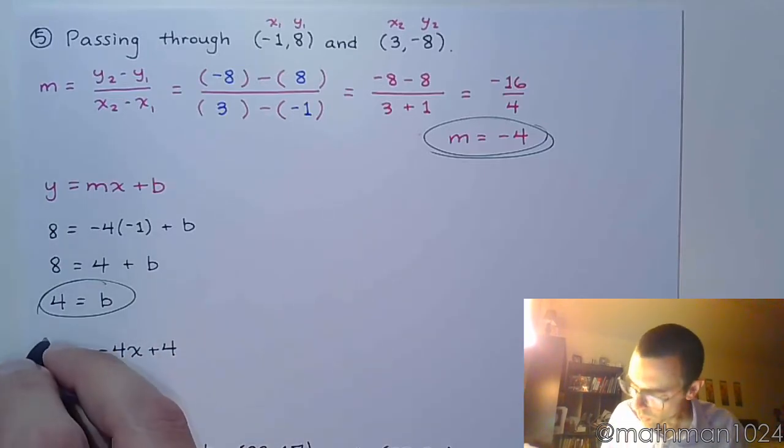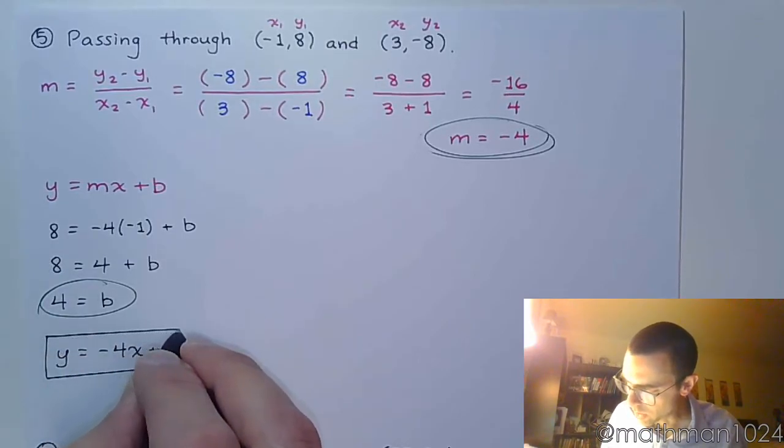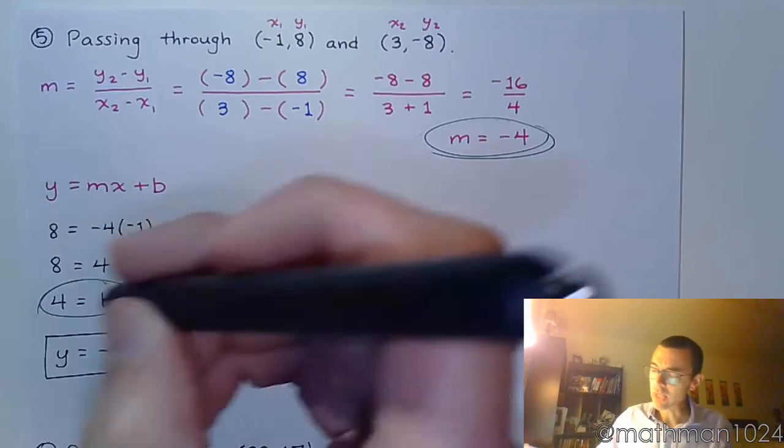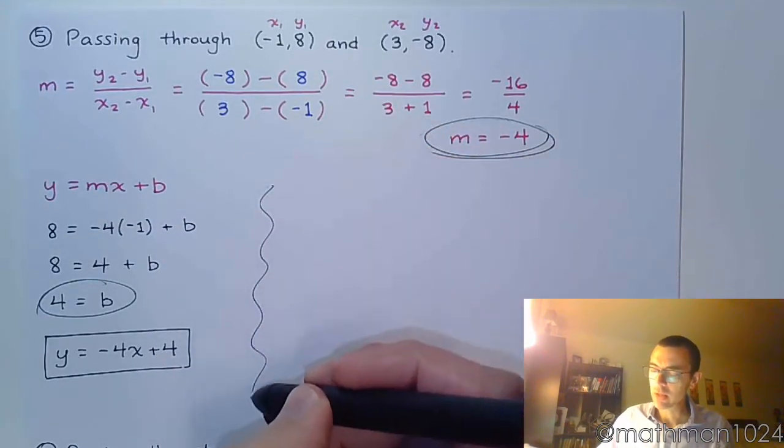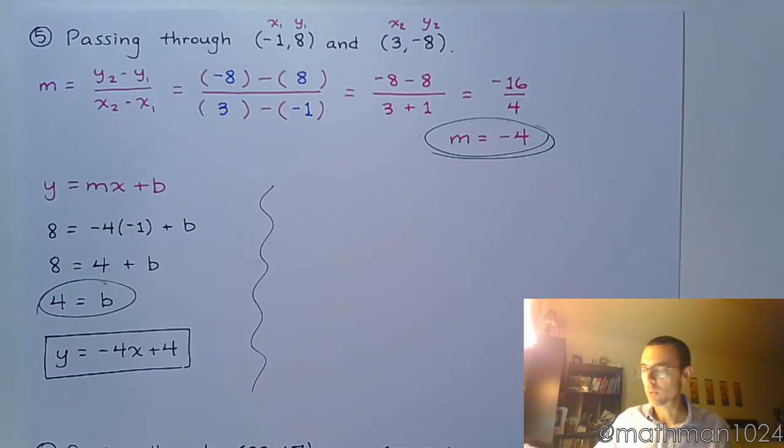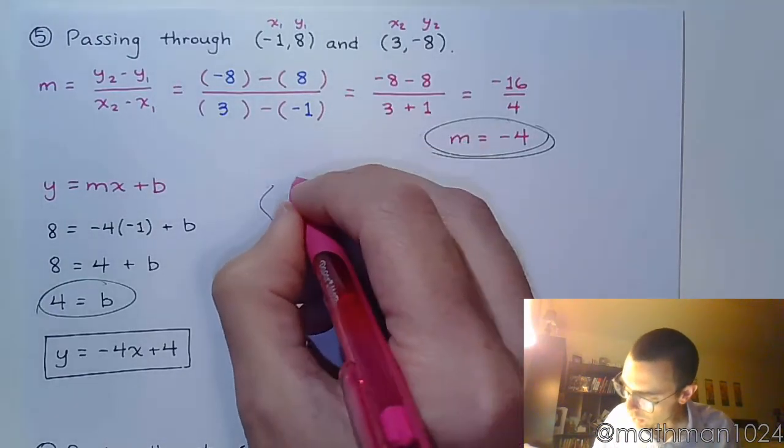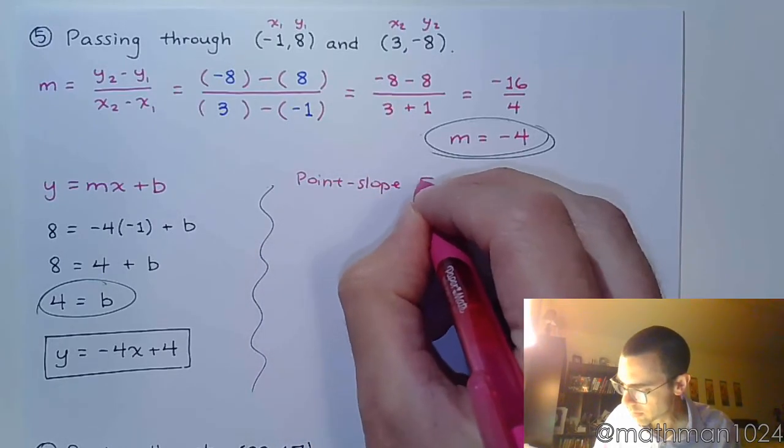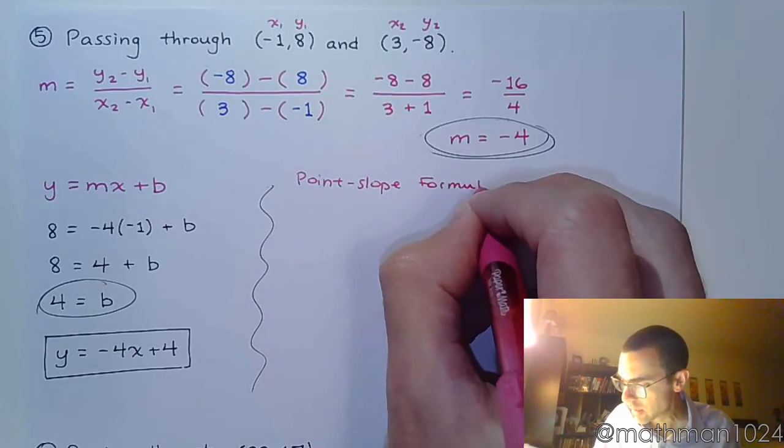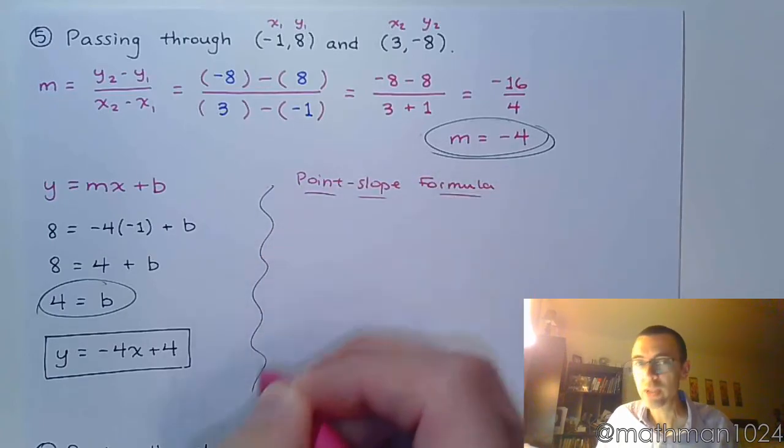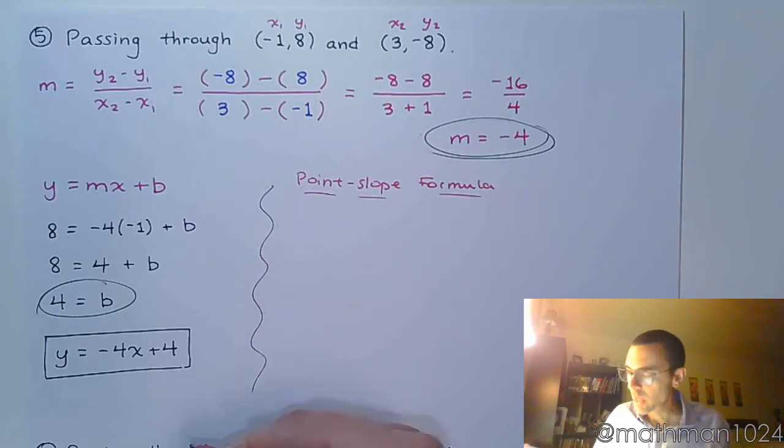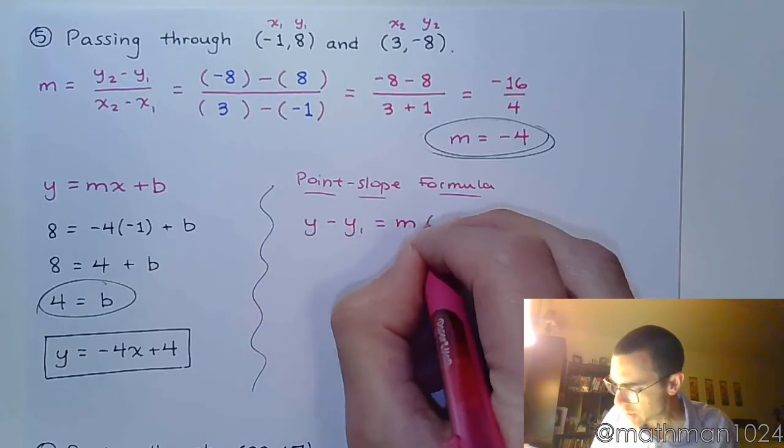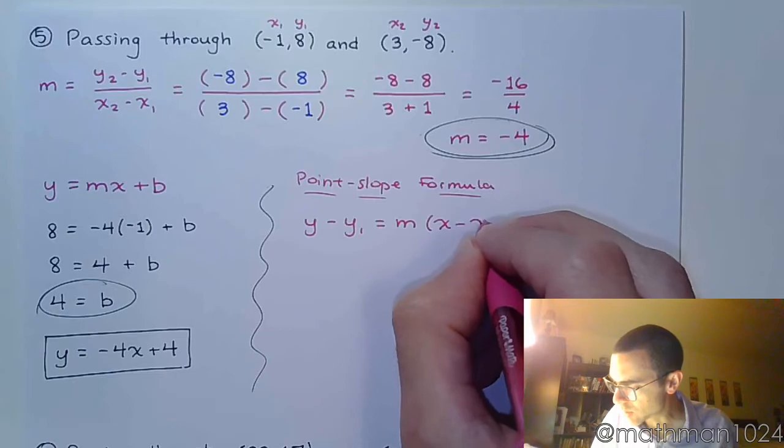Now, there was another form that I showed you quite a while ago, and that was the point-slope form. And I said, I don't really like to use that guy. I can, but he's not my favorite thing to work with. So the point-slope formula is used for when you have a point and you've got a slope. And it looks like this: y minus y1 equals m times x minus x1.